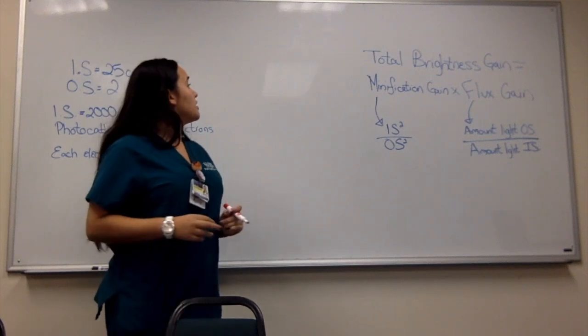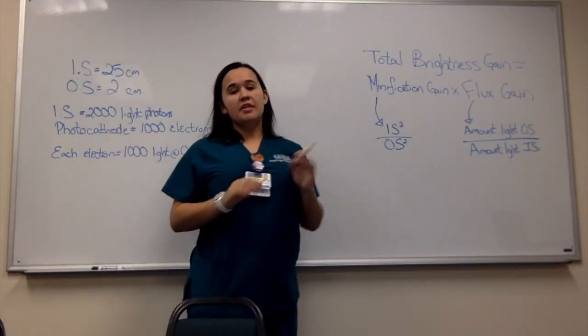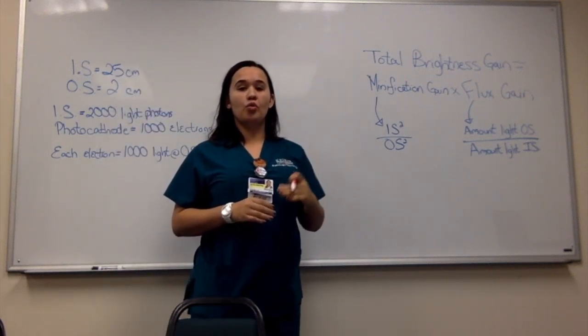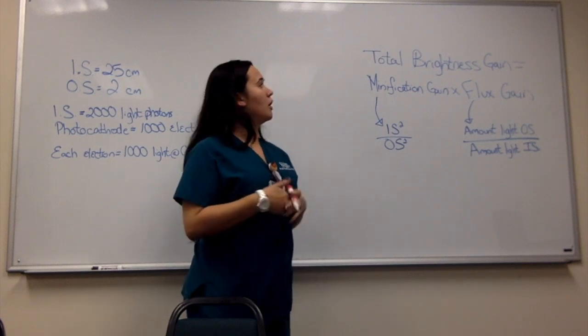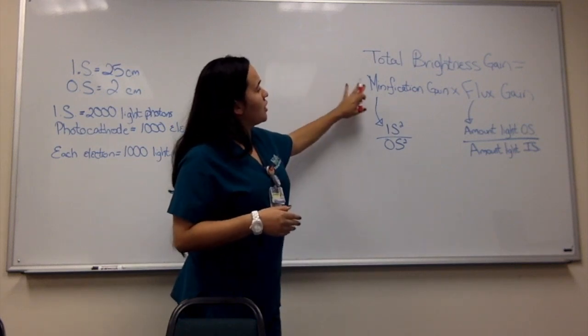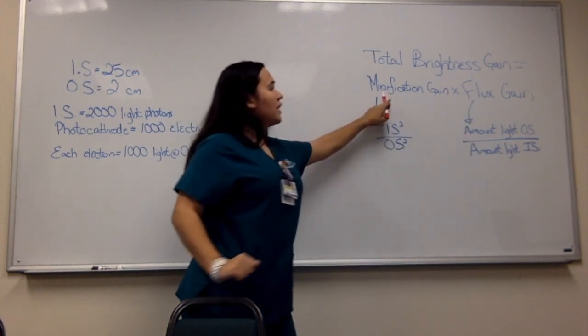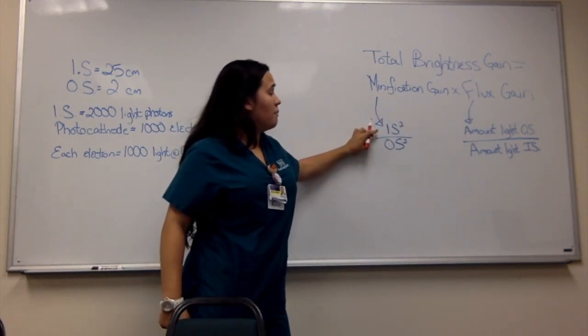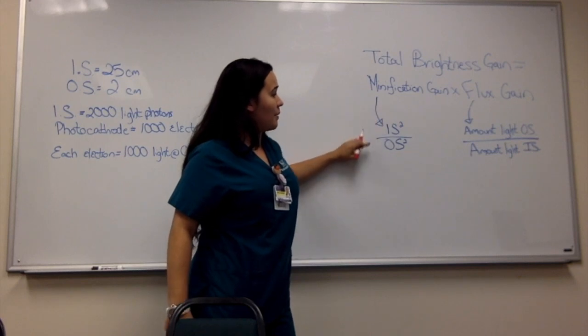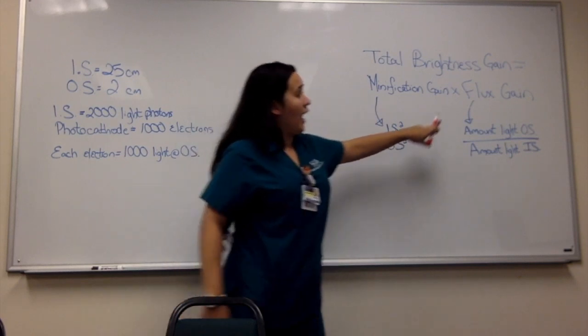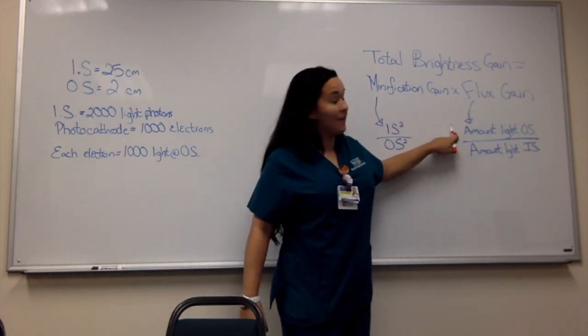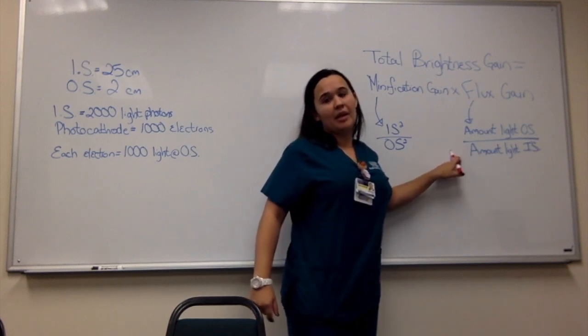So there's also a formula to figure out the total brightness gain. This is how much the intensifying tube makes the image brighter. In order to find that, you need to find the minification gain multiplied by the flux gain. So the minification gain is the input screen size squared divided by the output screen size squared. And the flux gain is the amount of light at the output screen divided by the amount of light at the input screen.